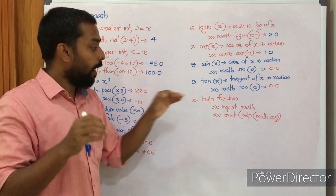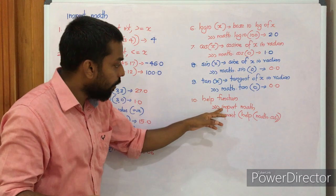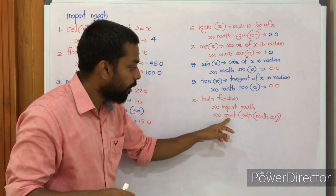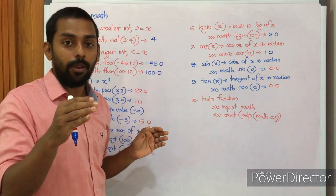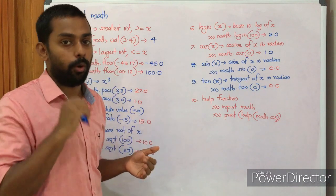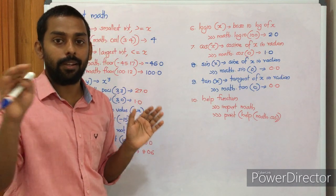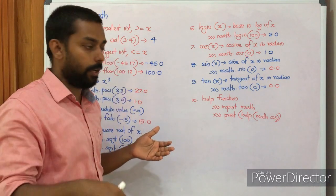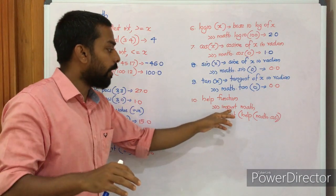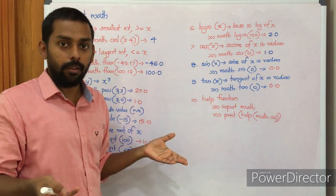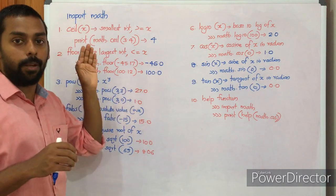Finally we have the help function, which provides help to the user. For example: import math, then print(help(math.cos)). We are seeking help on the cosine function available in the math module, which prints a statement like 'cosine value of x'. You can also apply help directly on the module itself — just try it for yourself. These are some of the functions available in the math module.